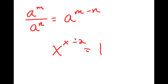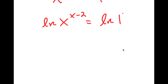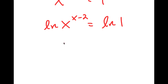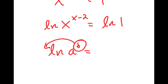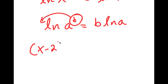Now I'm going to take the ln, or natural log, on both sides. So I get ln of x to the power of x minus 2 is equal to ln of 1. The reason I did this is because logarithms have a special property where if I have something in the form ln a to the power of b, I can simply move this exponent b to the front — this is the same thing as b times ln a. So I have x minus 2 times ln x is equal to ln 1.